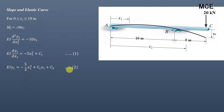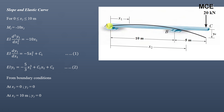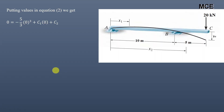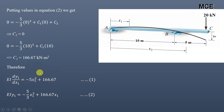Applying boundary conditions: at x1 = 0, y1 = 0 (deflection is zero at the hinge), and at x1 = 10, y1 = 0 (deflection is zero at the roller). Substituting x1 = 0 into equation 2 gives C2 = 0. Substituting x1 = 10 gives C1 = 166.67 kN·m². These values are then substituted back into equations 1 and 2.